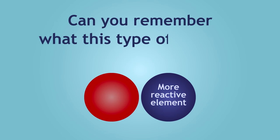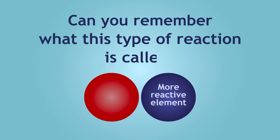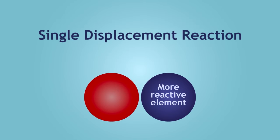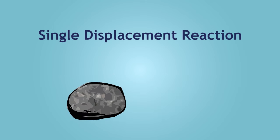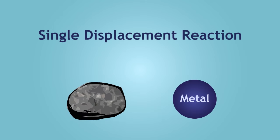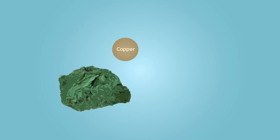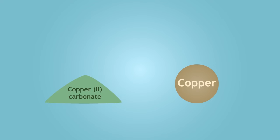Can you remember what this type of reaction is called? Pause, think, and continue when ready. The answer is a single displacement reaction. So to extract a metal from an ore, a single displacement reaction must occur. We can mimic the extraction of copper from malachite using copper(II) carbonate powder.